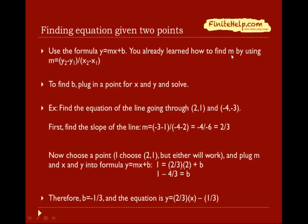As you recall, you already learned how to find the slope by using this formula. And now, we're going to find the entire equation when you're given two points. First, you find your slope, and then you're going to plug in x and y to solve for b. Let's do an example. We're going to try to find the equation of the line going through these two points. You start out by finding the slope, which is (3-1) on top, (-4-2) on the bottom. And you have a slope of 2 thirds.